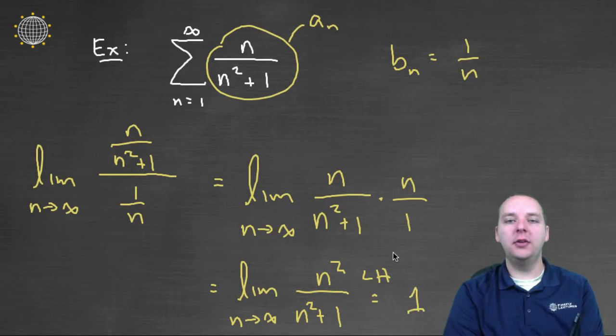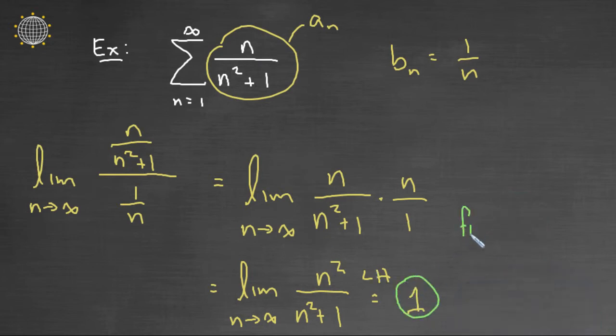Now this is great news, because if you remember the results from the limit comparison test, it said that if this number was finite, so let's jot that down. It is finite, and positive, which it is positive, then that means that both series either converge together or diverge together.